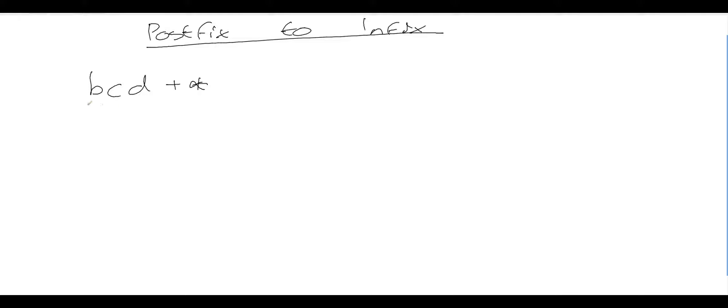Now the easiest way to do this is look along the expression for the first time you see two operands and an operator coming immediately after them. And that's here in this expression. I've got cd plus.